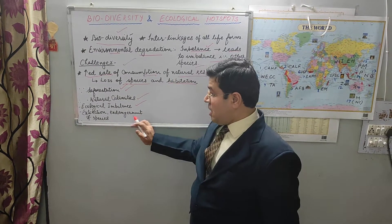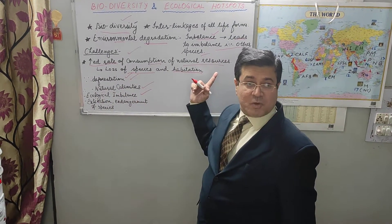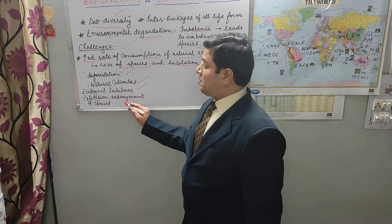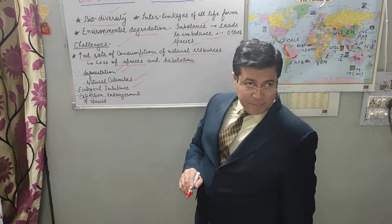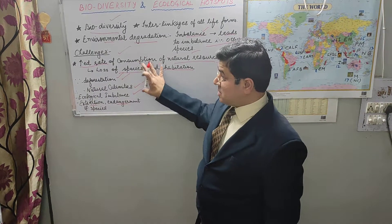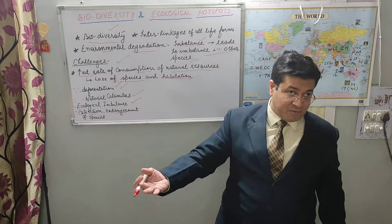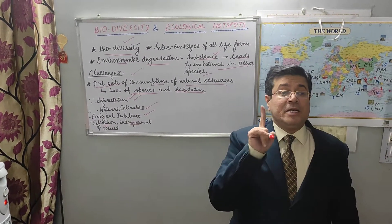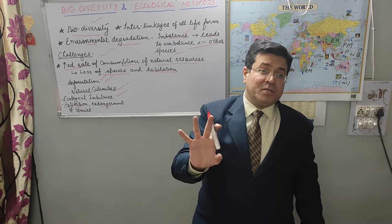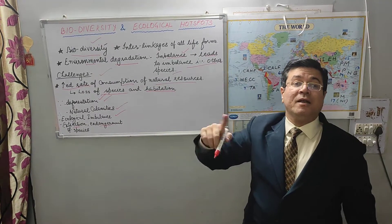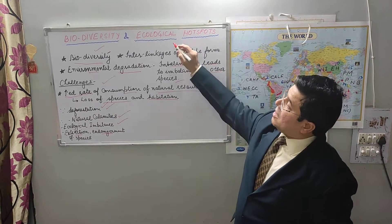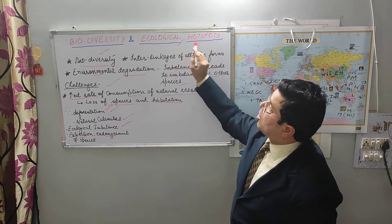These are the causes. Now consequences: ecological imbalance, and extinction of many species, and many species are becoming endangered also. These are the causes and consequences of loss of biodiversity. Now we need to conserve biodiversity — we need to conserve the areas wherever we have biodiversity. For this we need to understand where in the whole world we have great biodiversity areas. These great biodiversity areas are named as ecological hotspots in the world.